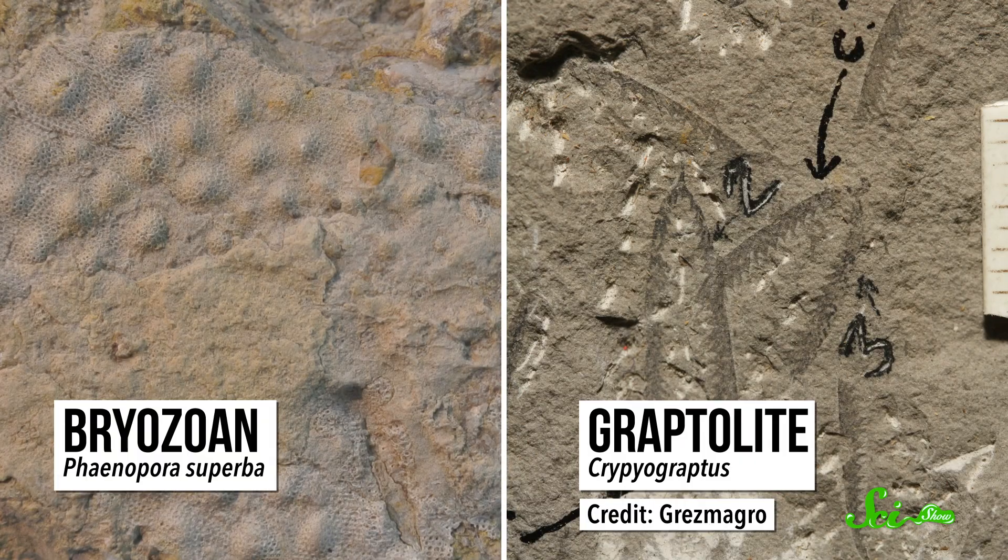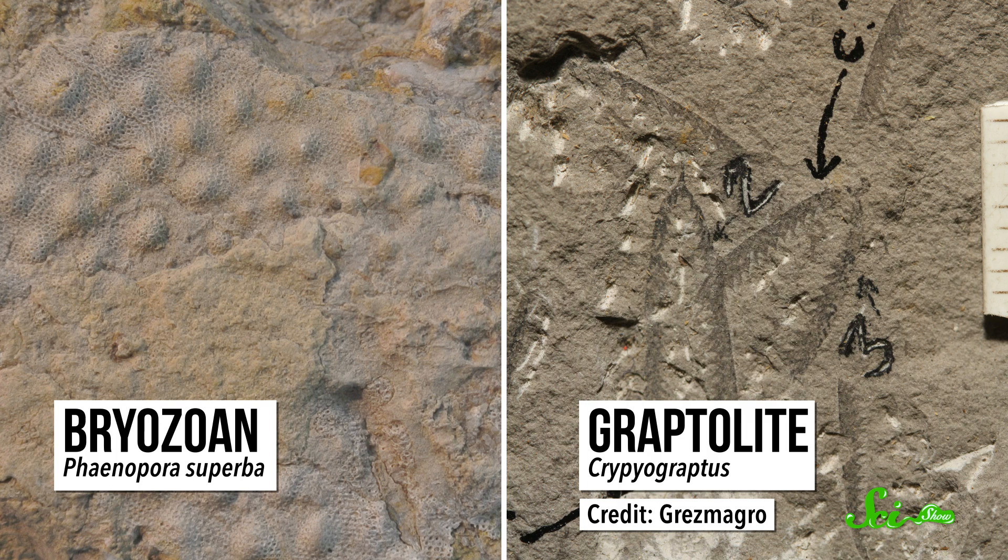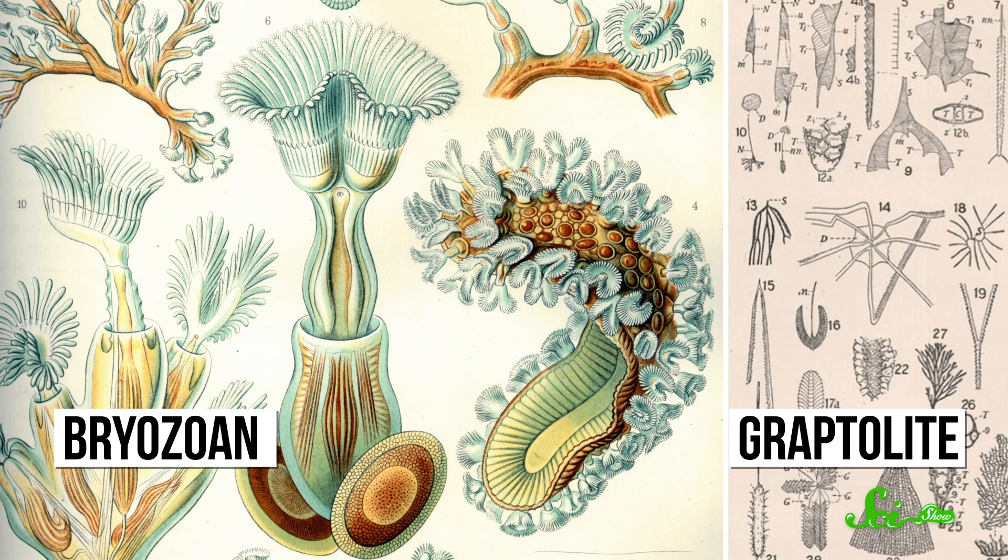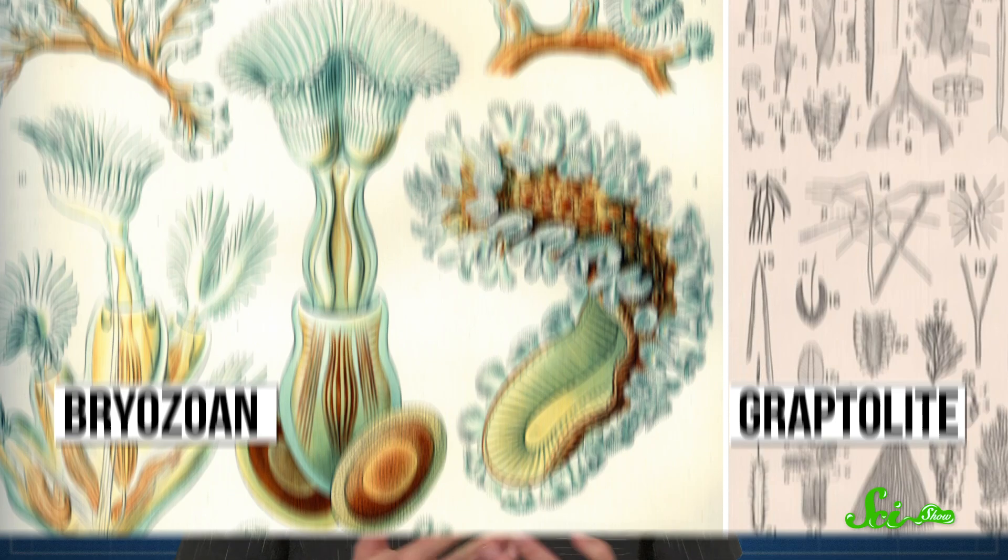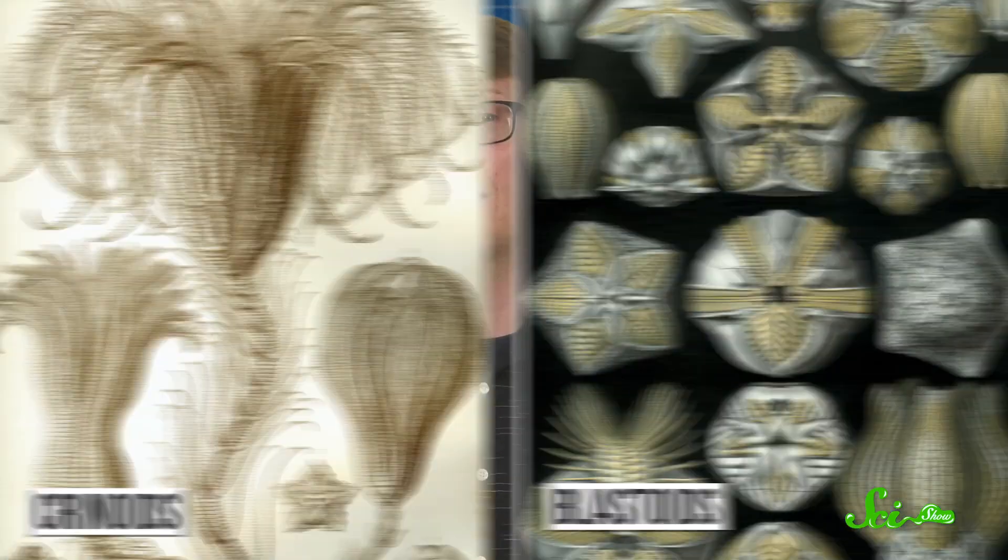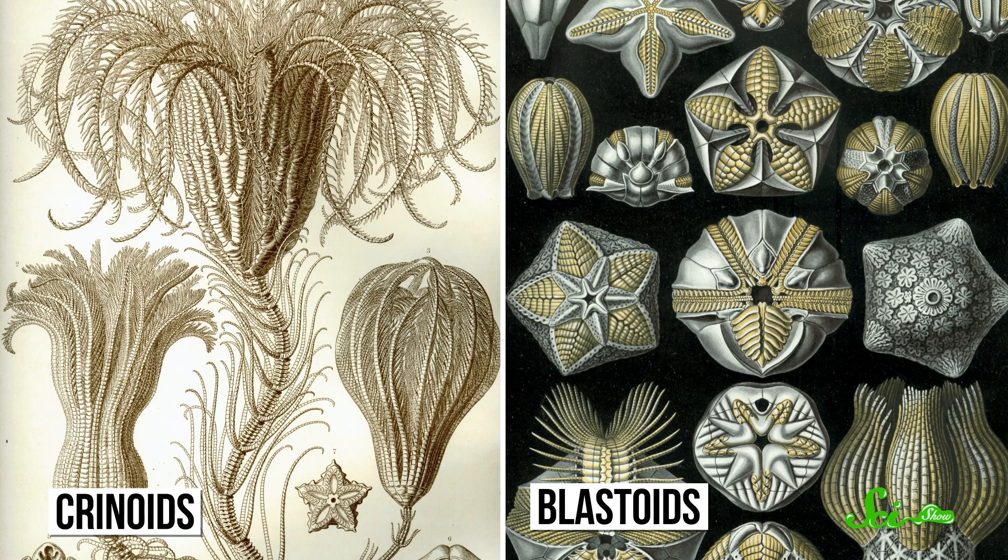There were reefs full of coral, algae, and sponges, along with weird, colonial animals called bryozoans and graptolites. Bryozoans tended to stay on the seafloor, growing on rocks where the shells of other animals, while some graptolites built floating colonies like apartment buildings. There were also clam-like brachiopods and lots of different echinoderms, including modern-looking starfish, and flower-like crinoids and blastoids.